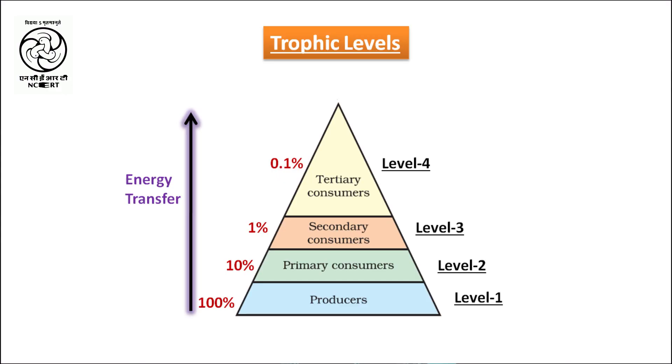When we talk about energy flow, green plants in a terrestrial ecosystem capture only one percent of the radiant solar energy for food production. Being enormous in number, they occupy the greatest number at the lowest trophic level. When herbivores eat these plants, most of the energy is lost as heat — only 10 percent is utilized for their growth and reproduction, and this 10 percent is the average value for energy transfer to the next trophic level.